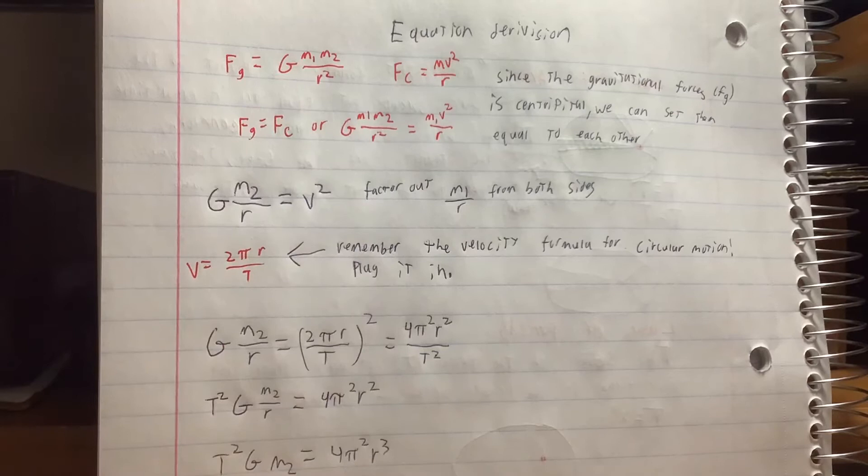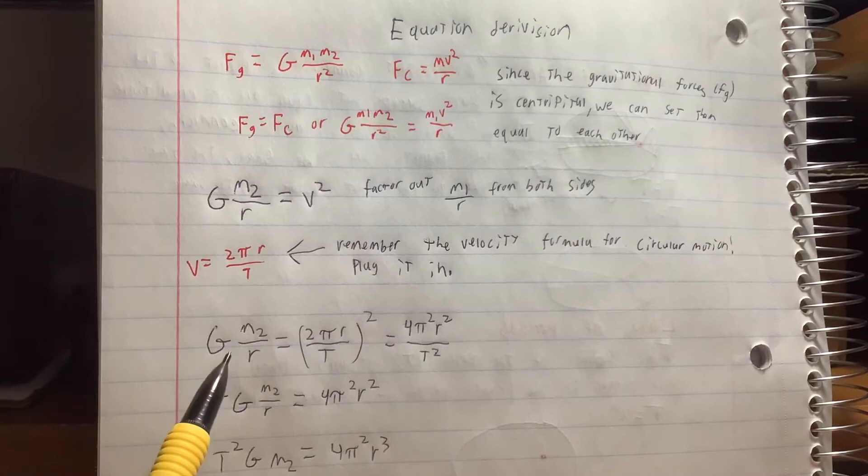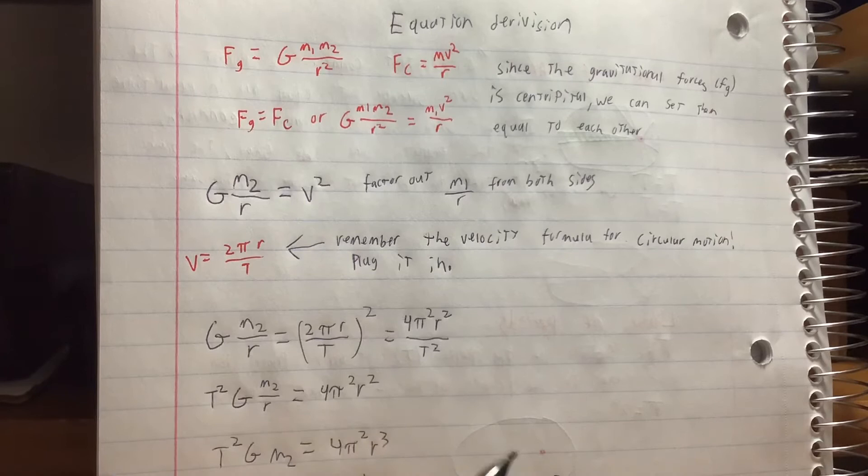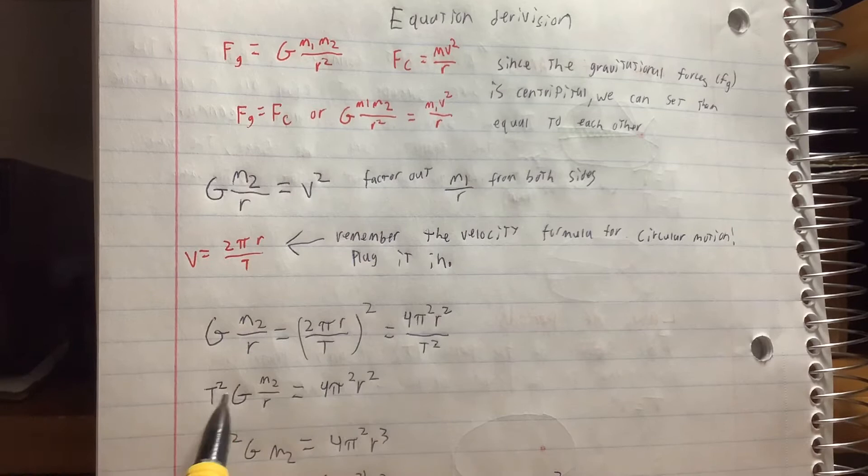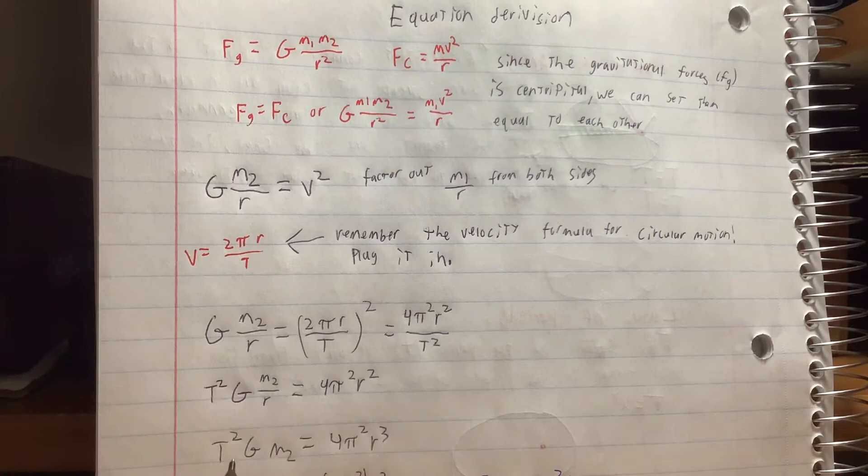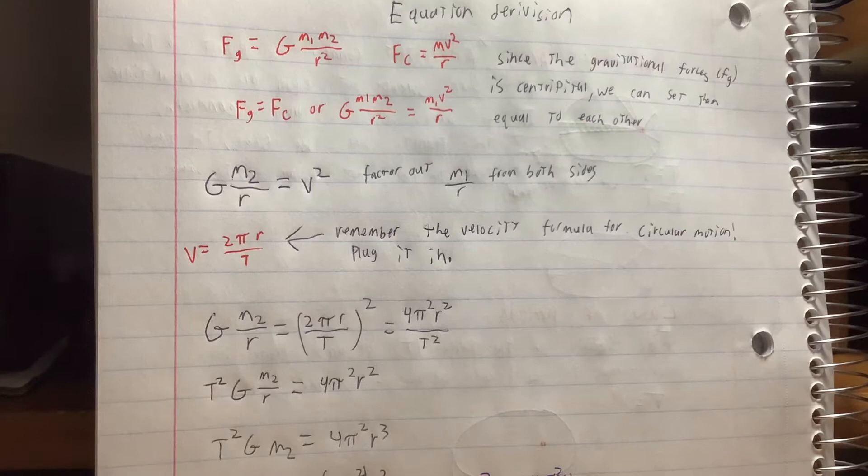For circular motion, the velocity equation is v equals 2 pi r over t. Plugging that v in, we get g m2 over r equals 4 pi squared r squared over t squared. Multiply t squared by both sides and we get t squared g m2 over r equals 4 pi squared r squared. Multiply both sides by r and we get t squared g m2 equals 4 pi squared r cubed. Divide both sides by g m and we get period t squared equals